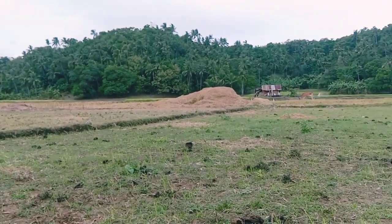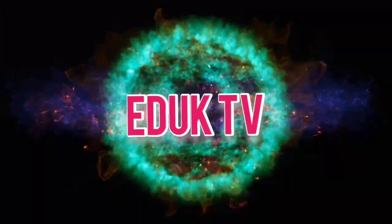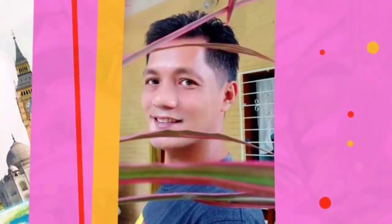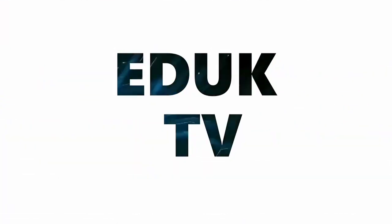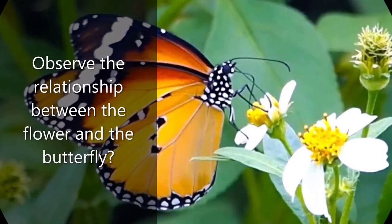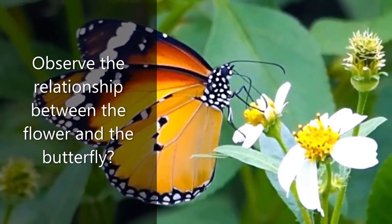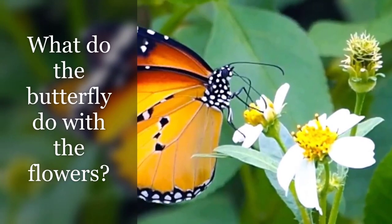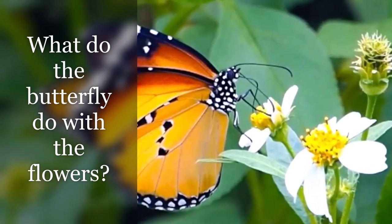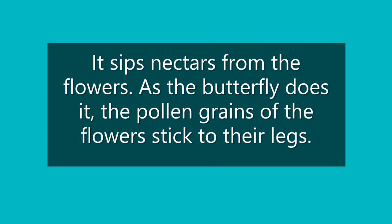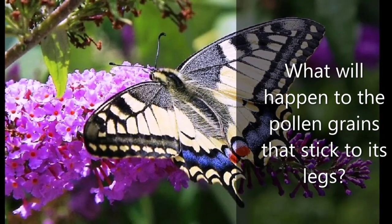This video will describe the different beneficial interactions among living things in the environment. Welcome to my channel, it's Edu TV. Observe the relationship between the flower and the butterfly. What does the butterfly do with the flowers? It sips nectar from the flowers. As the butterfly does this, the pollen grains of the flowers stick to their legs. What will happen to the pollen grains that stick to its legs?